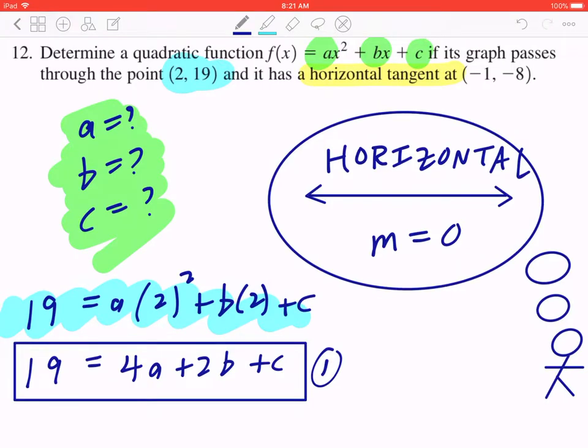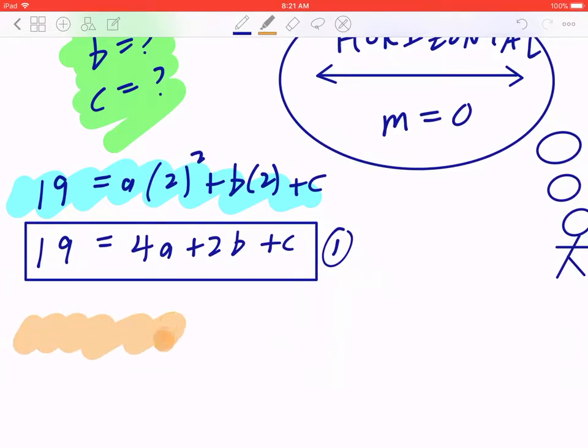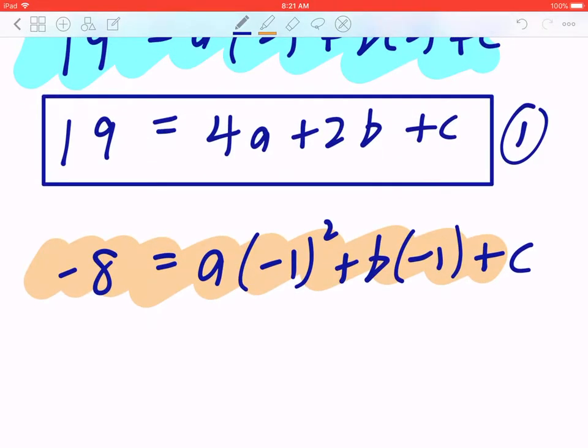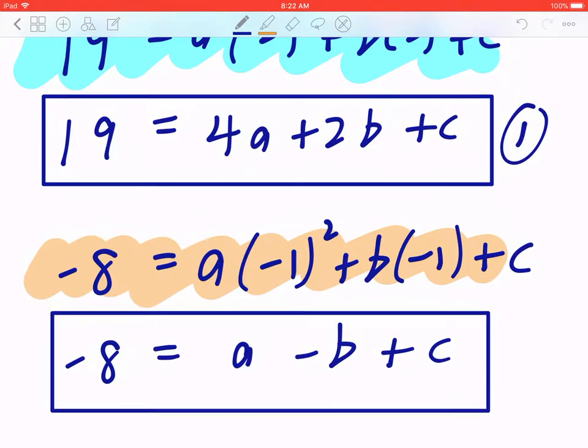Now, likewise, if you look at the second point, negative 1, negative 8, same idea. That's another point on this function. So if you plug in x and y to be negative 1 and negative 8, this will give you negative 8 equals a times negative 1 squared plus b times negative 1 plus c. When you collect like terms, negative 8 equals a minus b plus c. Again, you can put a box around this. I'm going to call this equation number 2.